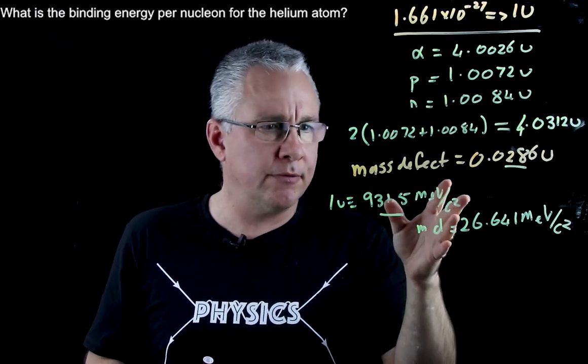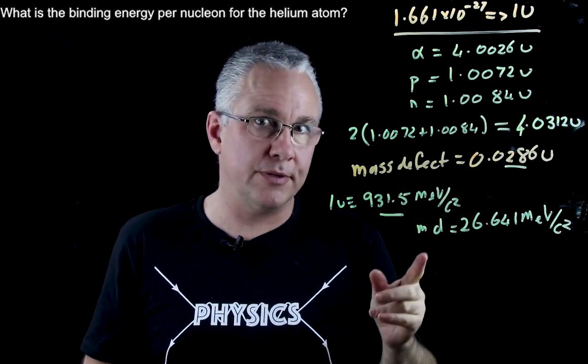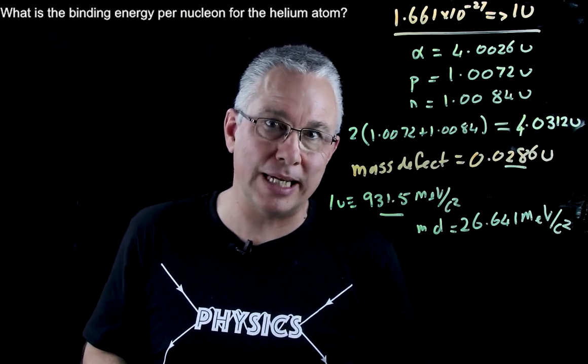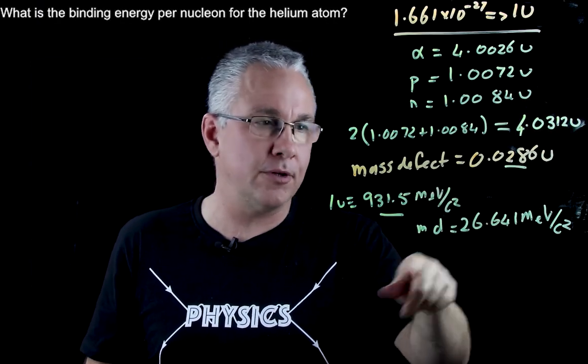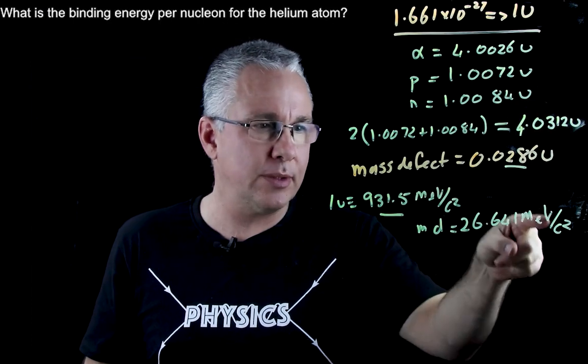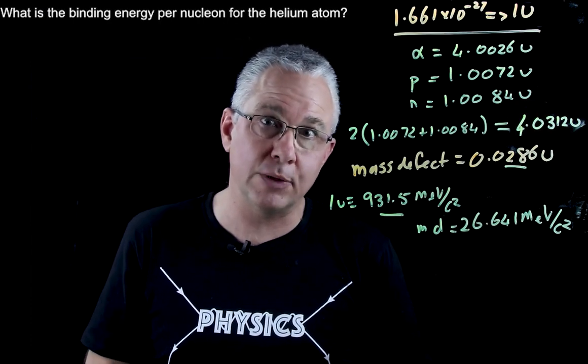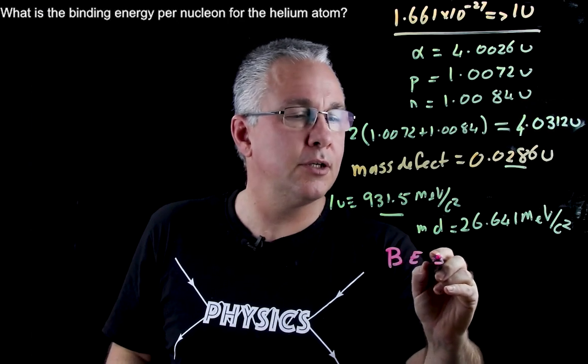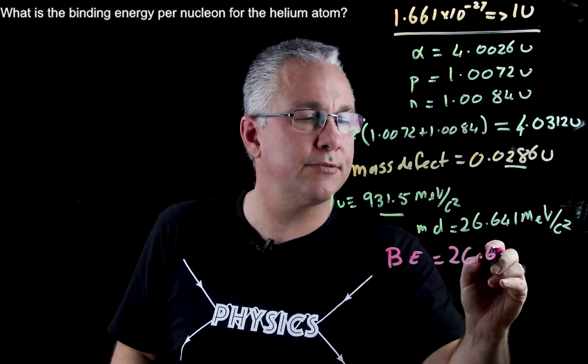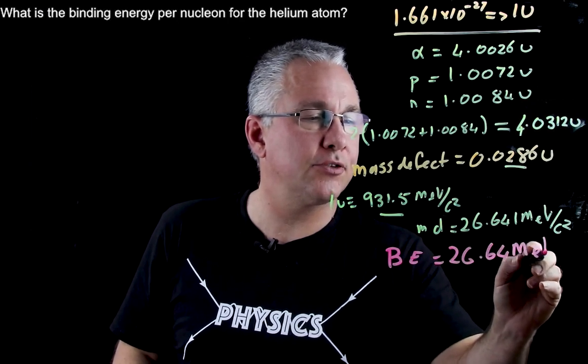Now how do I convert that to energy? Well it's very easy. You just drop off the c squared because if this is in terms of mass, if I want just the energy that converts to, I multiply by c squared which is getting rid of that value of c squared. So I'm going to get a binding energy value of 26.64 mega electron volts.